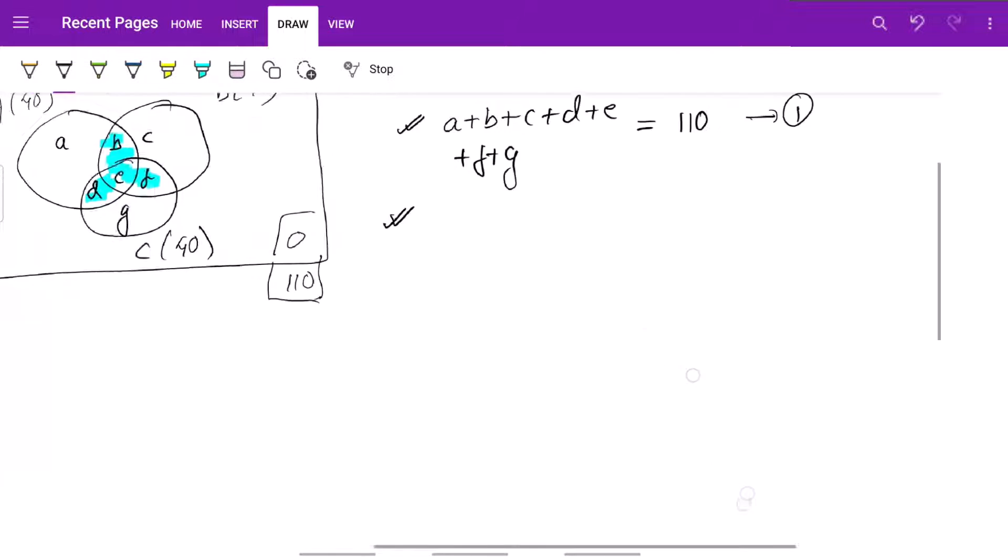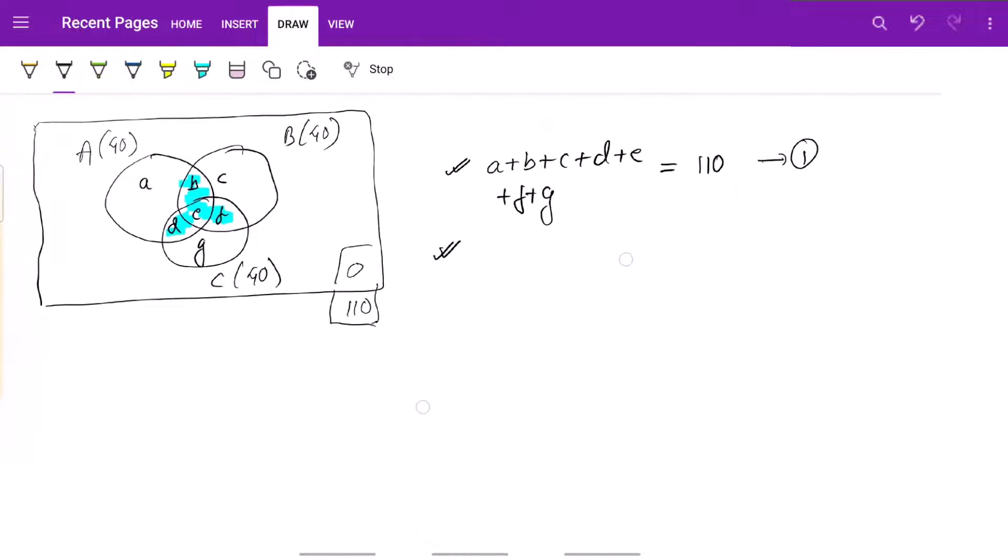The second equation that we can write is we need to add this 40 plus this 40 plus this 40. So, for example, here this 40 is a plus b plus d plus e, this 40 for A.